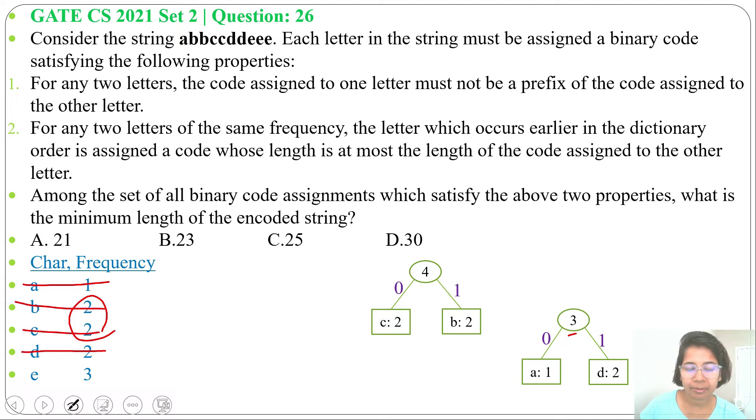Next, 'e' is left with frequency 3, so we'll write 'e' before this 3. Now we'll add these two, sum is 6, and we'll add the level: 0 for left child, 1 for right child. Then again we'll add, addition will be 1.